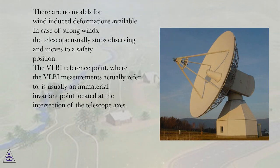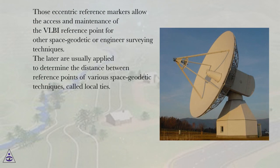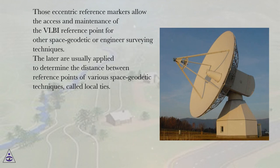The VLBI reference point, where the VLBI measurements actually refer to, is usually an immaterial invariant point located at the intersection of the telescope axes. Since this point is usually not directly accessible, it needs to be eccentrically realized — for example through indirect measurements from external reference markers (Vittori et al., 2001; Dawson et al., 2007). Those eccentric reference markers allow the access and maintenance of the VLBI reference point for other space geodetic or engineering surveying techniques, which are usually applied to determine the distance between reference points of various space geodetic techniques, called local ties.